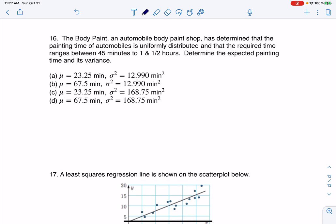All right, number 16 says the body paint, an automobile body paint shop, has determined that the painting time of automobiles is uniformly distributed and the required time ranges between 45 minutes to an hour and a half. Determine the expected painting time and its variance. Okay, so let's piece all of this together.